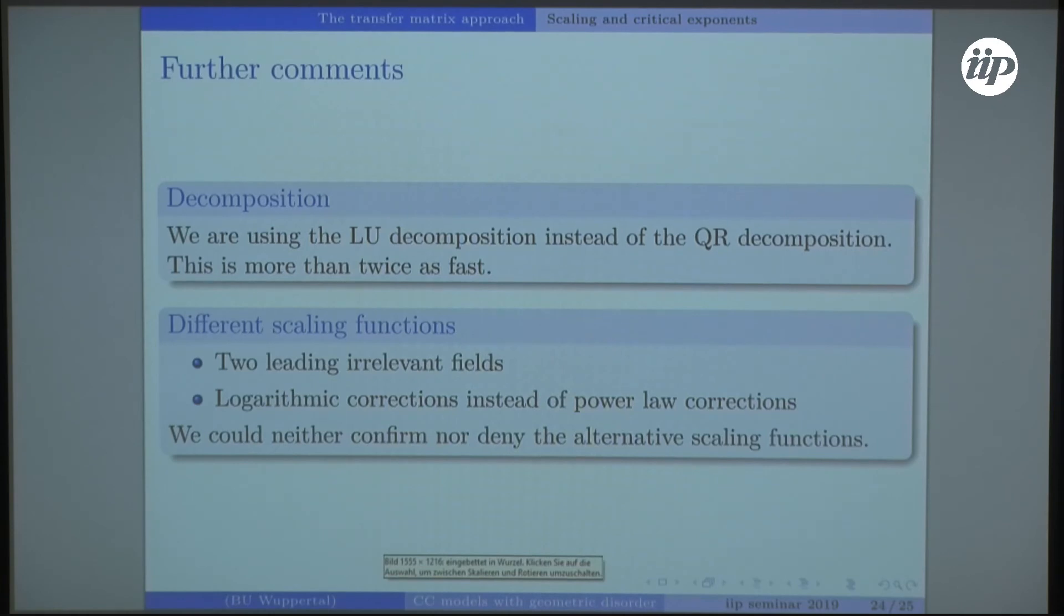Some further comments on what we did, maybe on the numerics. We have been using the LU decomposition instead of the QR decomposition. This was quite beneficial because it's at least twice as fast, sometimes more depending on the implementation. We have also been looking at different scaling functions, for example two leading irrelevant fields, and logarithmic corrections instead of power law corrections. Unfortunately we could not really distinguish between the different models. All of those fits kind of worked and they were so close that we couldn't tell the difference.